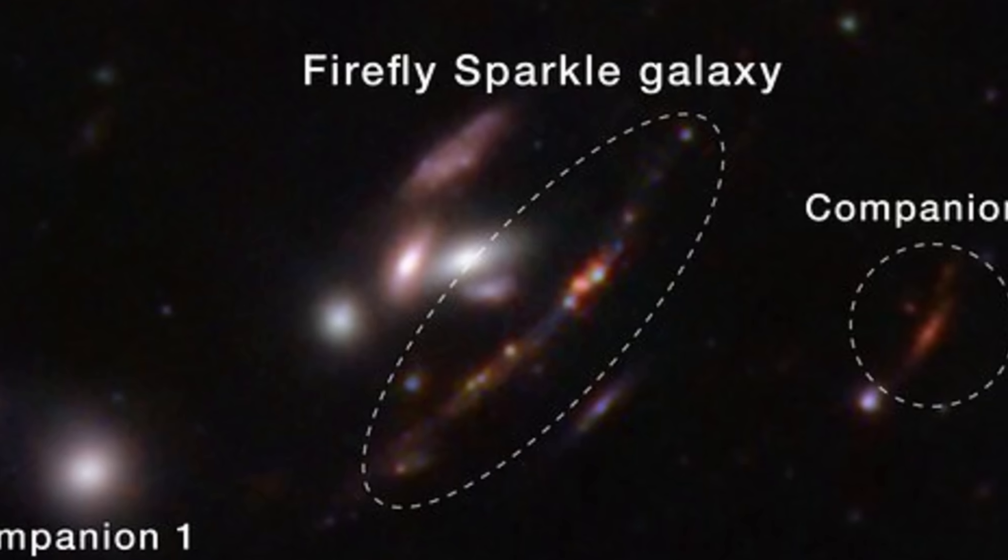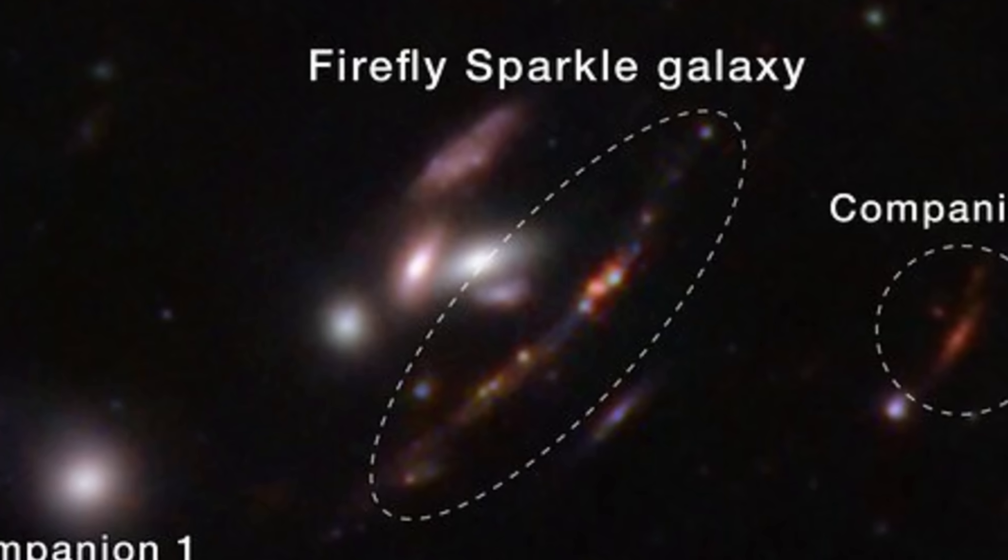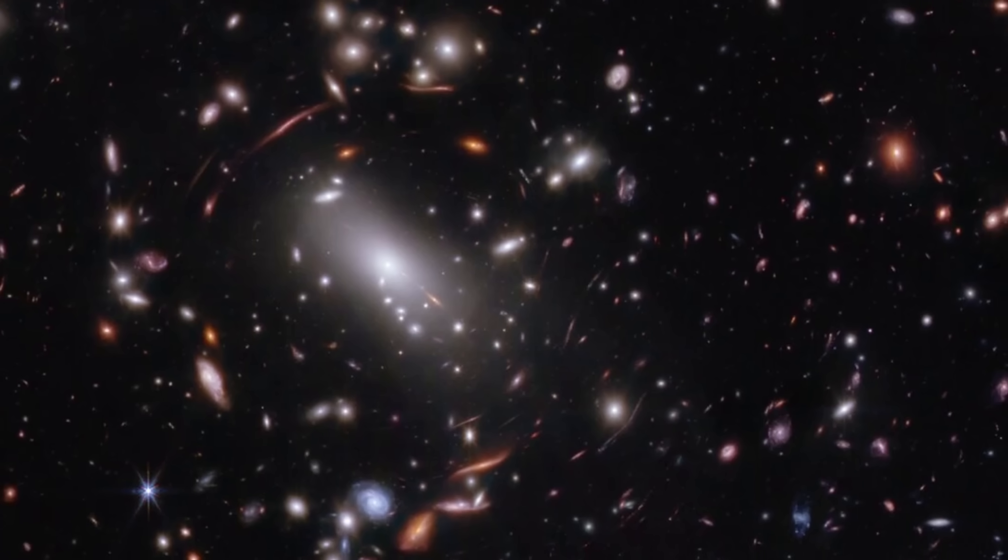And so what we're seeing here is basically a kind of Milky Way-like galaxy progenitor that seems to be at least 10,000 times smaller and less massive. But despite being so small and despite being so young, it was captured in this image. And in this case it's all because of this.